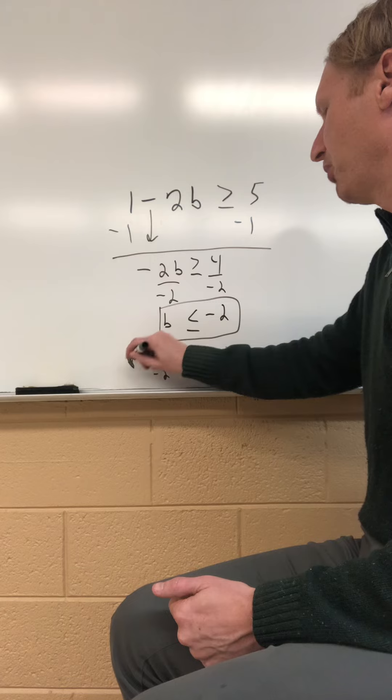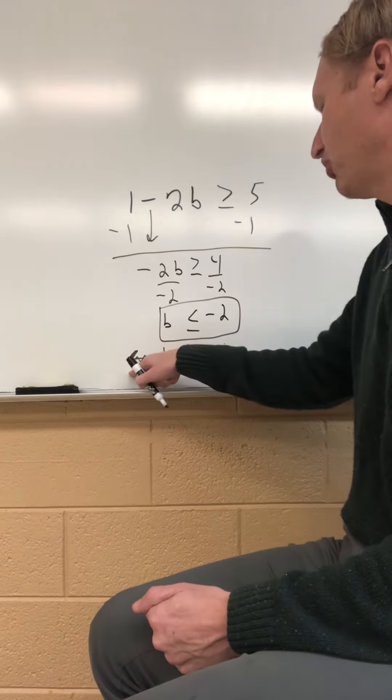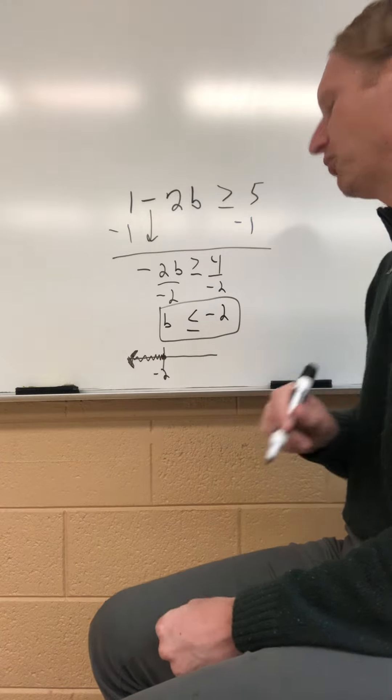And kind of a key thing to remember with this is as long as your variable is first, the symbol should always be the same direction as the arrow that you're shading in. So this is b is less than or equal to negative 2.